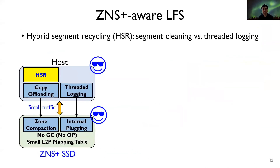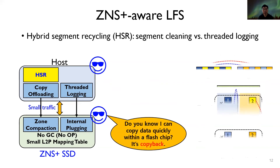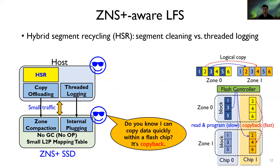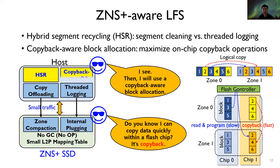To utilize the new features of ZNS+, we also propose a ZNS-Aware LFS. First, it uses hybrid segment recycling to select between segment cleaning and threaded logging by comparing their reclaiming efficiencies. Second, to fully utilize copyback operations, copyback-aware block allocation is required. It attempts to allocate the destination address of data copies such that both the source and destination addresses of the target data are mapped to the same flash chip.